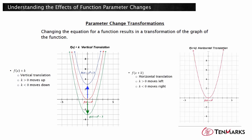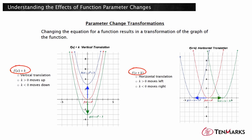f of the quantity x plus k will result in a horizontal translation of f. Each point on the graph of f will shift horizontally negative k units. This means when k is positive, the graph will shift to the left, and when k is negative, the graph will shift to the right. Notice the difference: if the k value is added to the function value, it is a vertical shift; if the k value is added to x inside the parentheses, it is a horizontal shift.